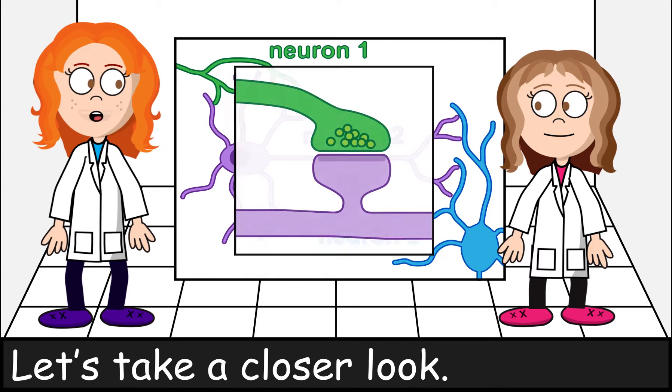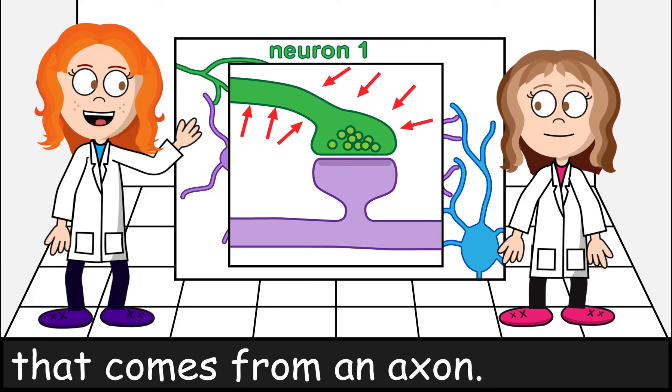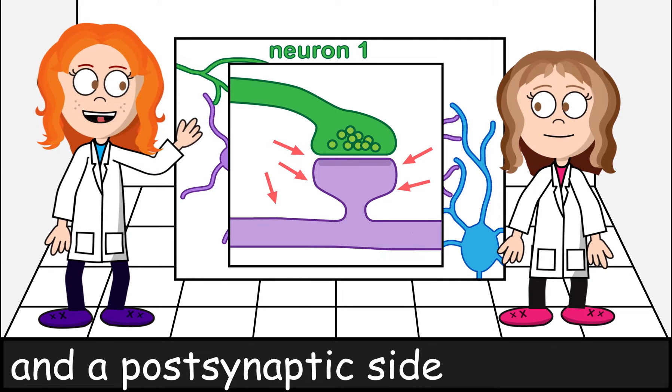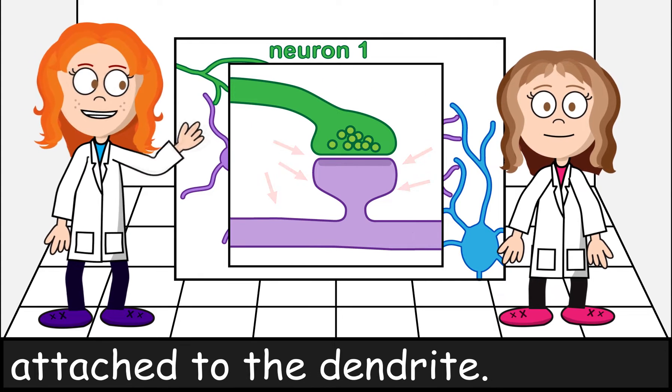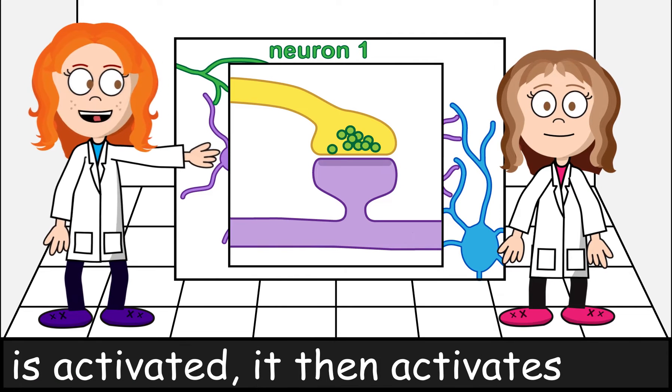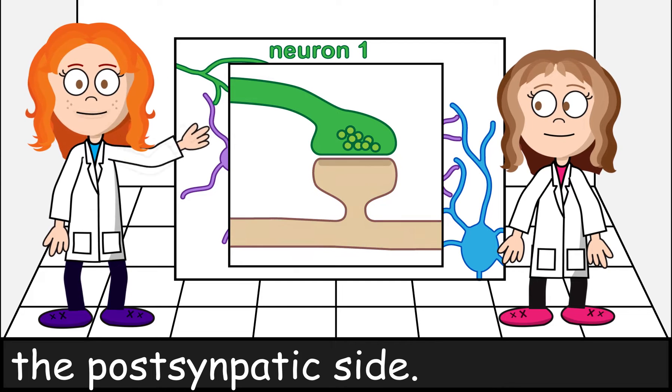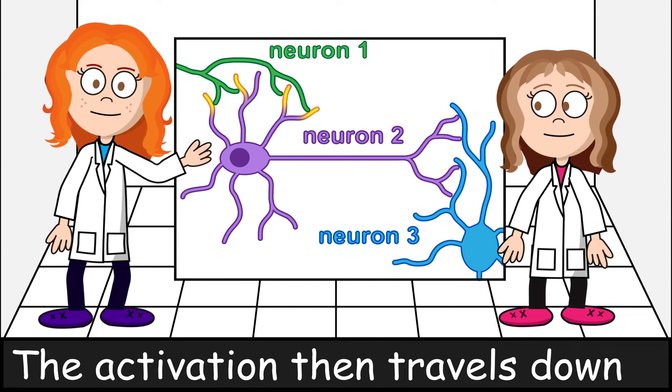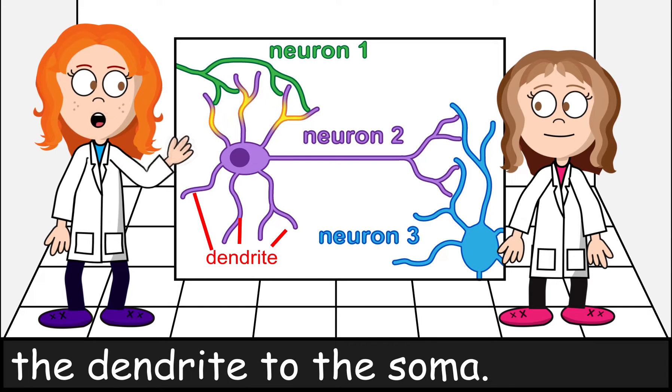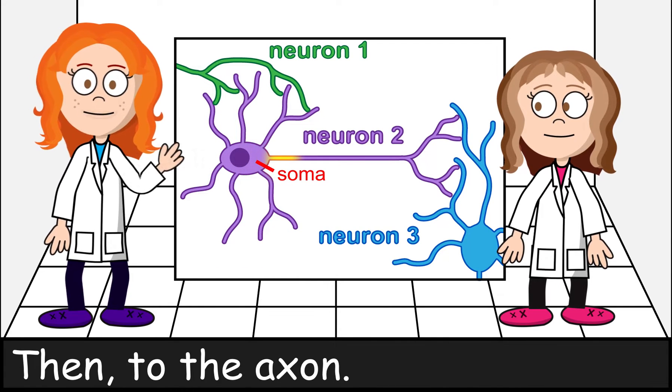Let's take a closer look. There's a presynaptic side that comes from an axon, and a postsynaptic side attached to the dendrite. When the presynaptic side is activated, it then activates the postsynaptic side. The activation then travels down the dendrite to the cell body. This is the center of the cell. Then, to the axon.